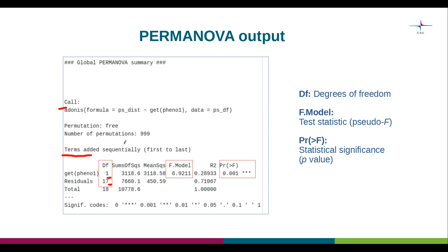The column called 'F.model' corresponds to the test statistic, which in the case of PERMANOVA is called the pseudo-F value. That value tells us something about the magnitude of the effect we've observed. The column called 'Pr(>F)' corresponds to the statistical significance of the test, or the p-value. Conventionally, p-values of less than 0.05 are considered statistically significant. In this case the number reported is 0.001, meaning the p-value is less than 0.001.